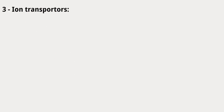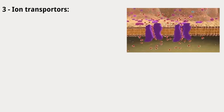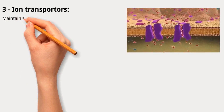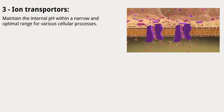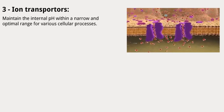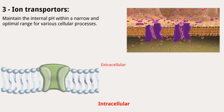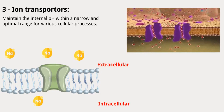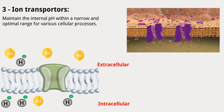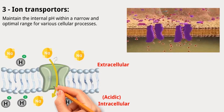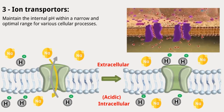The third mechanism is ion transporters. Ion transport proteins play a crucial role in regulating the pH of cells by actively moving ions, particularly protons and hydroxide ions, across cell membranes. These proteins help maintain the internal pH within a narrow and optimal range for various cellular processes. One well-known ion transport protein involved in pH regulation is the sodium-proton exchanger, NHE. NHE is a membrane protein found in many cell types, and it functions to exchange sodium ions for protons across the cell membrane. When the intracellular environment becomes too acidic, NHE facilitates the extrusion of protons from the cell in exchange for sodium ions, raising the intracellular pH by removing excess protons.